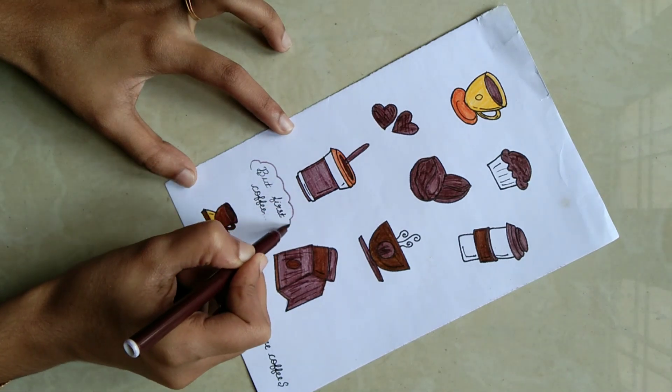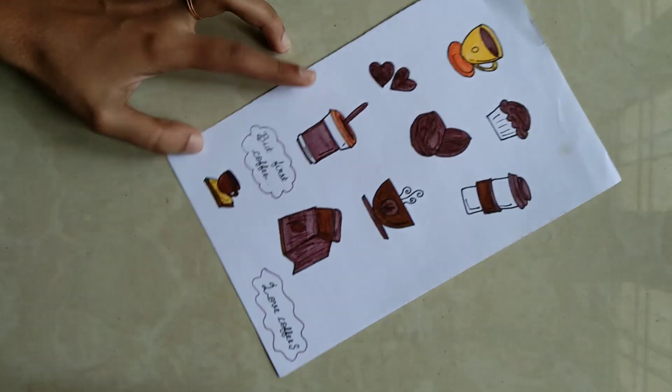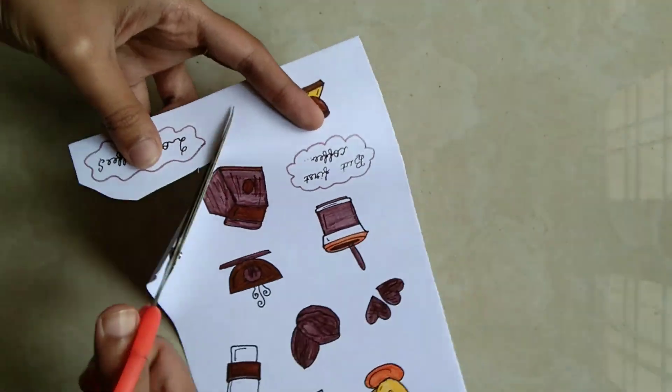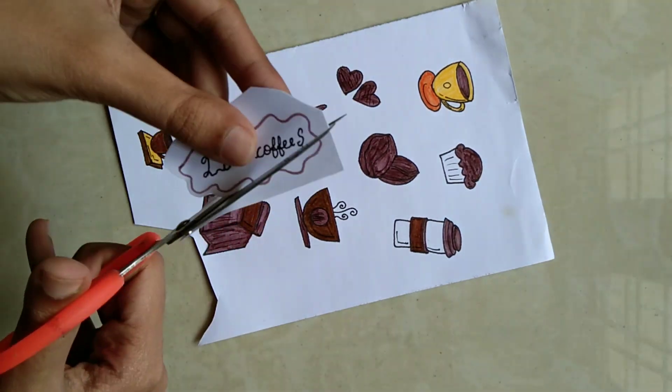We will cut the stickers to the next step. We'll cut the white portion around them.